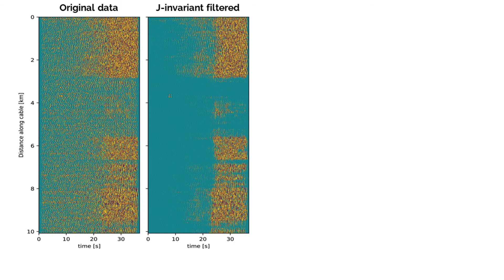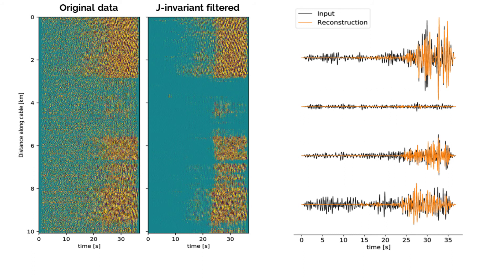Here is one of those examples where we have an earthquake recorded along most of the HCMR cable. Note that in the original data we have lots of incoherent noise that obscures some of the weaker signals around 10 to 20 seconds. After applying our J-invariant model, those weaker signals stand out much more clearly. We also see this in the individual waveforms, which show that the noise recorded prior to the earthquake is greatly suppressed while the earthquake waveform amplitudes remain well preserved.